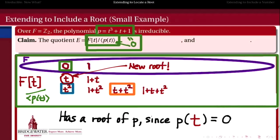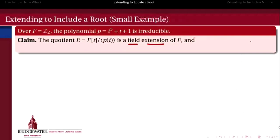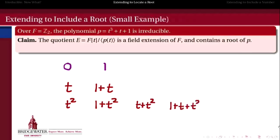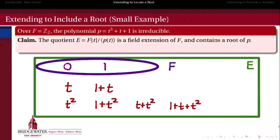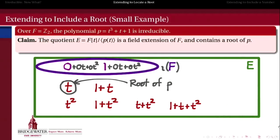So that's a small example of what this looks like. The main features: we showed this set is a field that extends F, and that it contains a root of p. The elements are those of Z mod 2 adjoined t — i.e., the polynomial ring modulo the principal ideal generated by t³ + t + 1. When thinking of this as a field extension via monomorphism, we think of 0 and 1 not literally as themselves, but as 0 + 0t + 0t² and so forth, which situates a copy of F inside E. The important feature is that this bigger field now contains a root of the polynomial that we didn't have before.